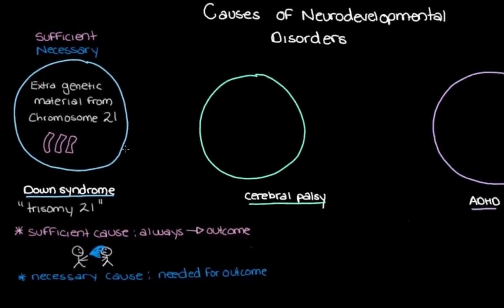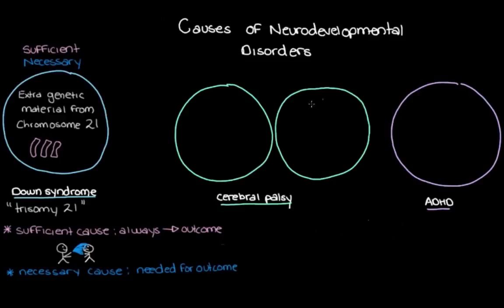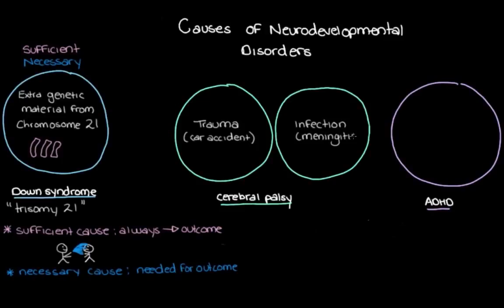So extra genetic material from chromosome 21 is both a sufficient and a necessary cause of Down syndrome — sufficient because it alone will always cause Down syndrome, and necessary because you can't have Down syndrome without it. Now let's look at cerebral palsy. There are quite a few different events that can each result in cerebral palsy. Let's draw another pie chart where each slice represents a different person with cerebral palsy — trauma from a car accident when a few months old, or an infection like meningitis a few days after birth.